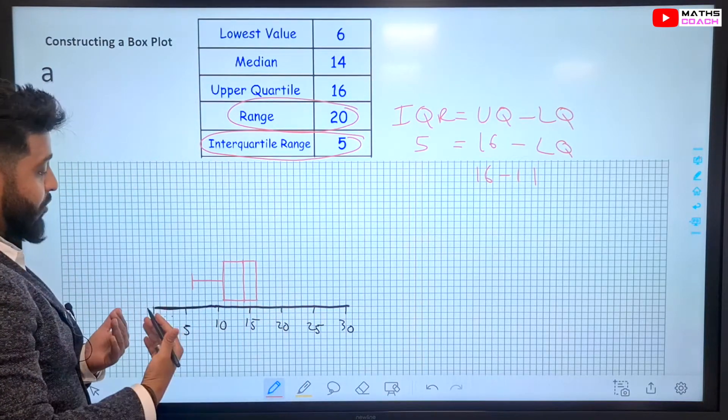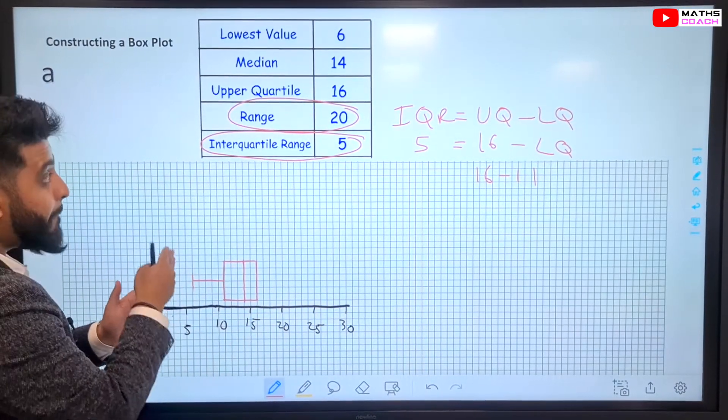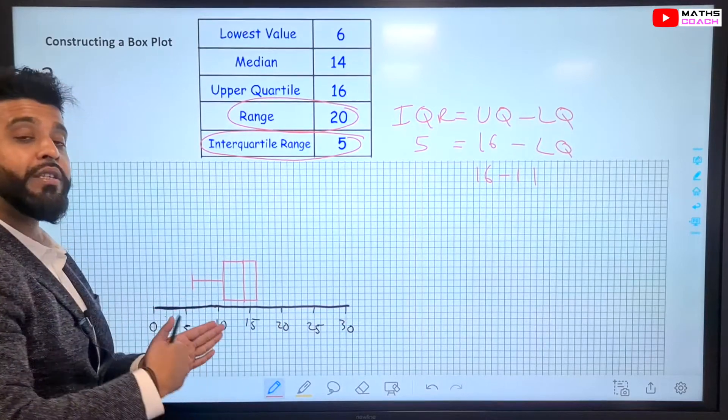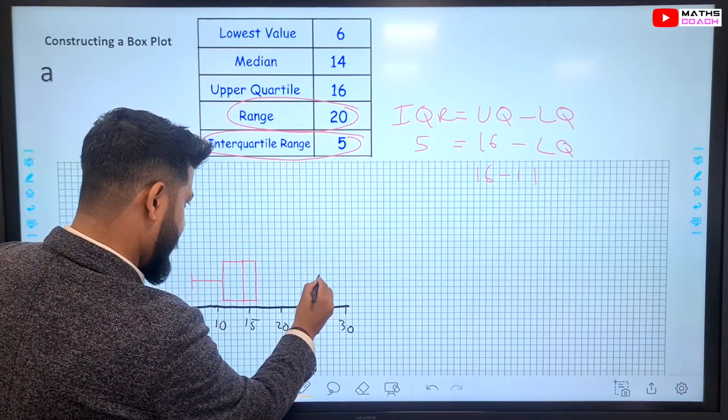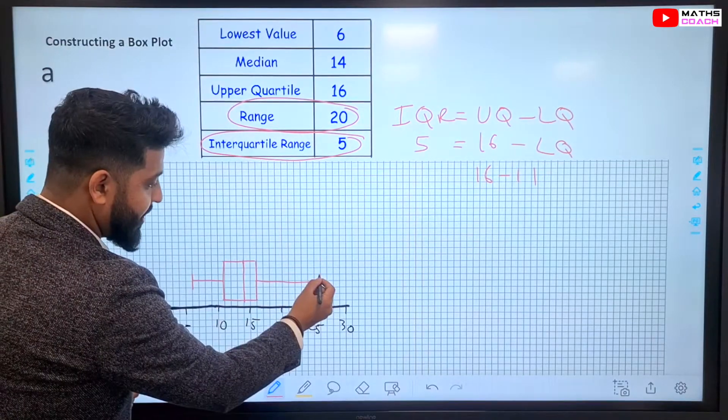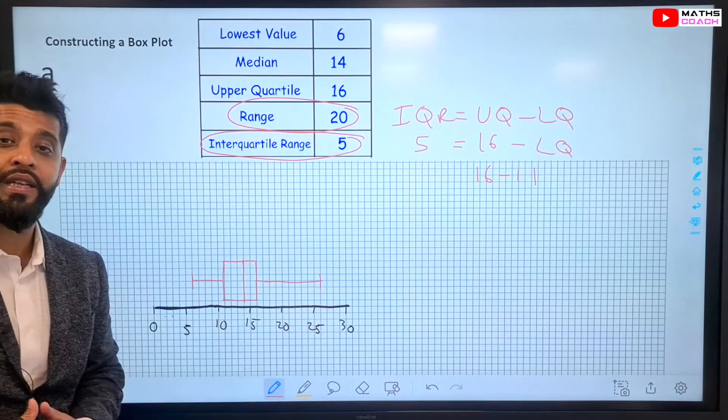Well, the easiest way to do that is to do 6 plus 20, which is 26. So, the highest value is 26. 26 is right there. And I have completed my box plot.